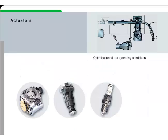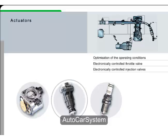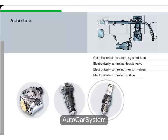In this chapter, you will discover which actuators assist the engine in fulfilling its functions and how these actuators optimize the operating conditions of the engine. You will find out about the function and effect of the electronically controlled throttle valve, the electronically controlled injection valves, and electronically controlled ignition.